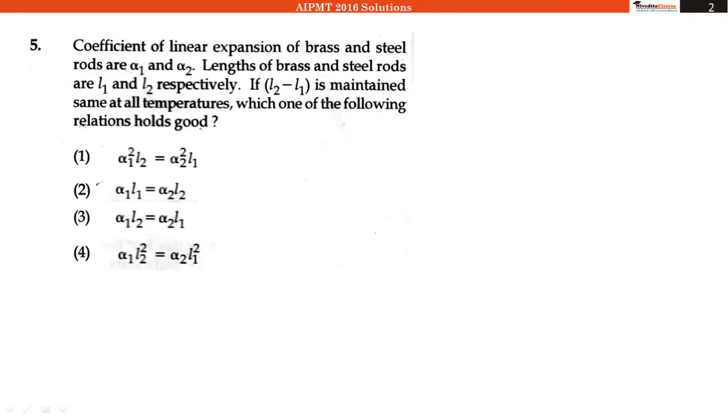The question says that coefficient of linear expansion of brass and steel rods are alpha 1 and alpha 2. Length of brass and steel rods are L1 and L2. And if L2 minus L1 is same for all temperatures, then which of the following relation holds good?